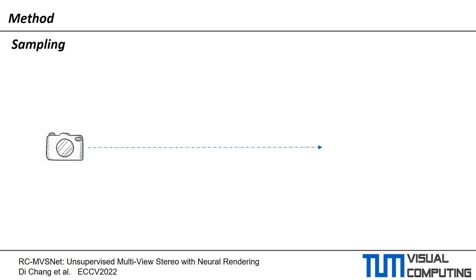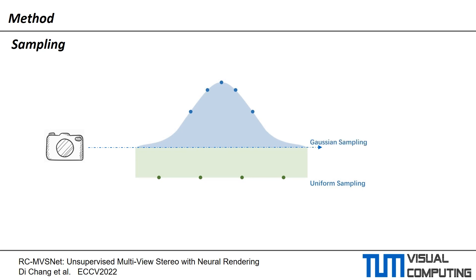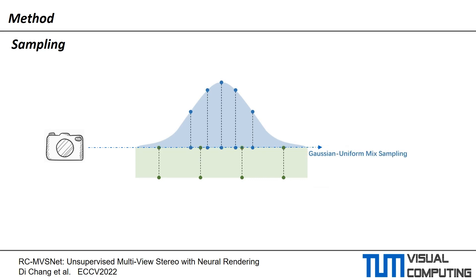During the sampling process of volume rendering, half of the points are distributed uniformly between the camera near and far plane, while the other half are drawn from a Gaussian distribution whose mean is the value of the initial depth. This enables geometry features for rendering to be more efficiently optimized, since we sample more point candidates close to the object surface.